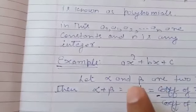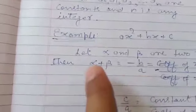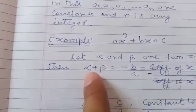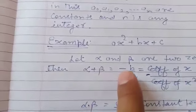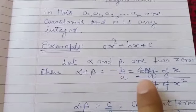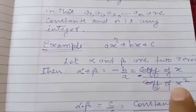Now, relation between alpha and beta. Alpha plus beta, we can say sum of the zeros, that is -b/a or we can also say coefficient of x upon coefficient of x².